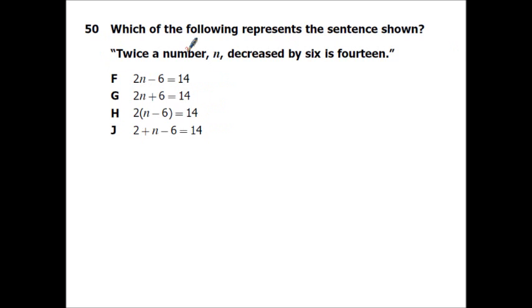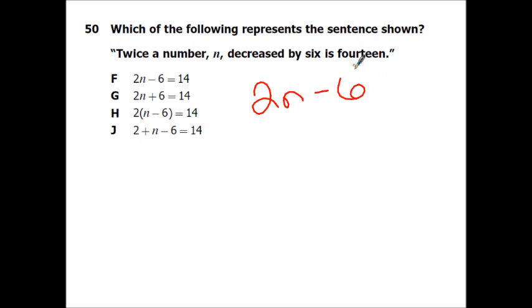Which of the following represents the sentence shown? 'Twice the number n' — that's 2n. 'Decreased by 6' — minus 6. 'Is' means equals 14. So the answer is 2n minus 6 equals 14.